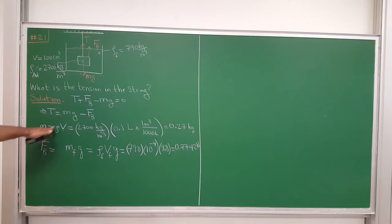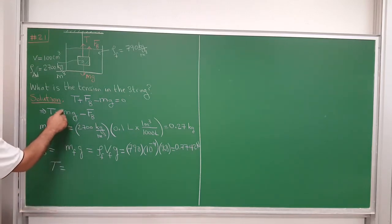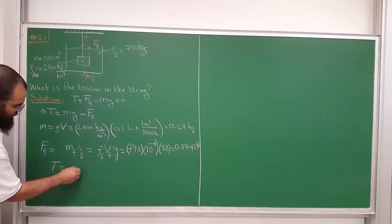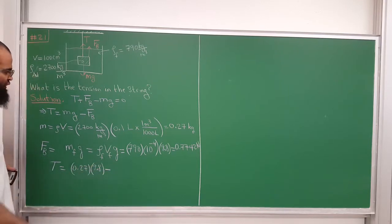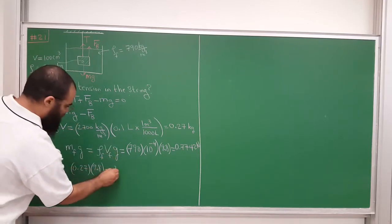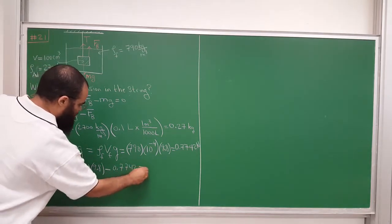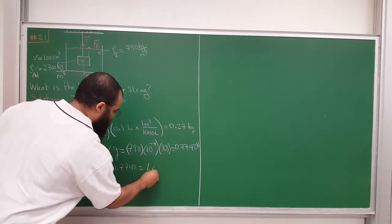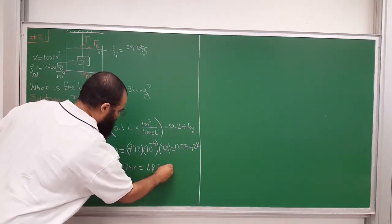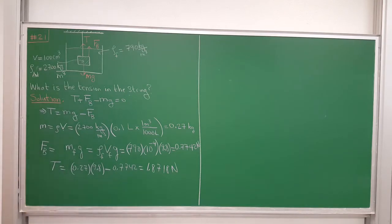The tension equals mg minus the buoyant force. The mass of aluminum is 0.27 kg, so mg = 0.27 × 9.8. Subtracting the buoyant force of 0.7742 newtons, we get approximately 1.87 newtons. That's the answer to problem one.